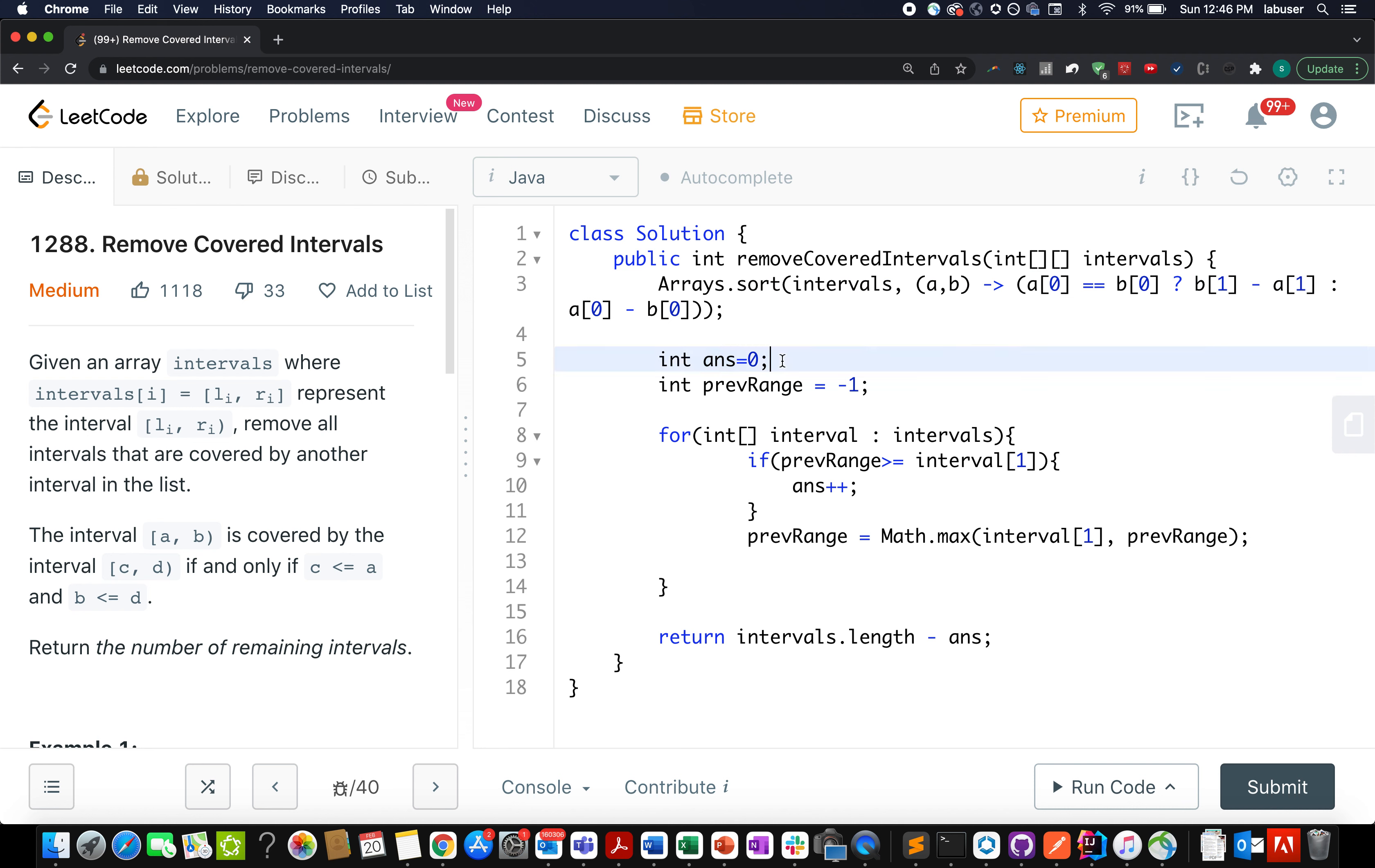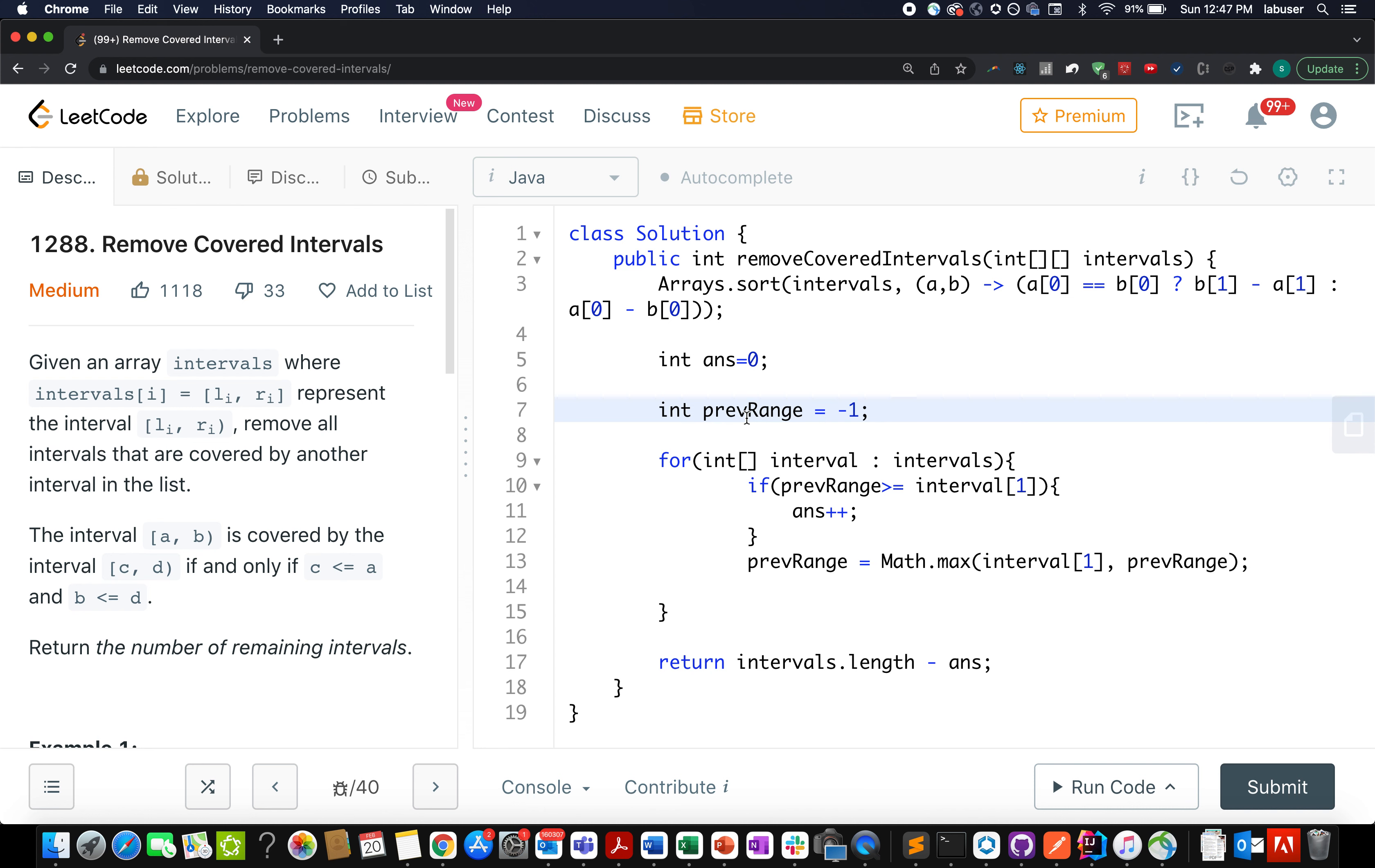I have created a removal count variable and I have created a previous range variable for the y coordinate. So this only signifies the y coordinate. Then I start the operation over the intervals using a for loop. If my previous range happens to be greater than or equal to the current element at the y-th index, that means the previous range is already covering this interval. As a result of it, I increment my removal count variable.